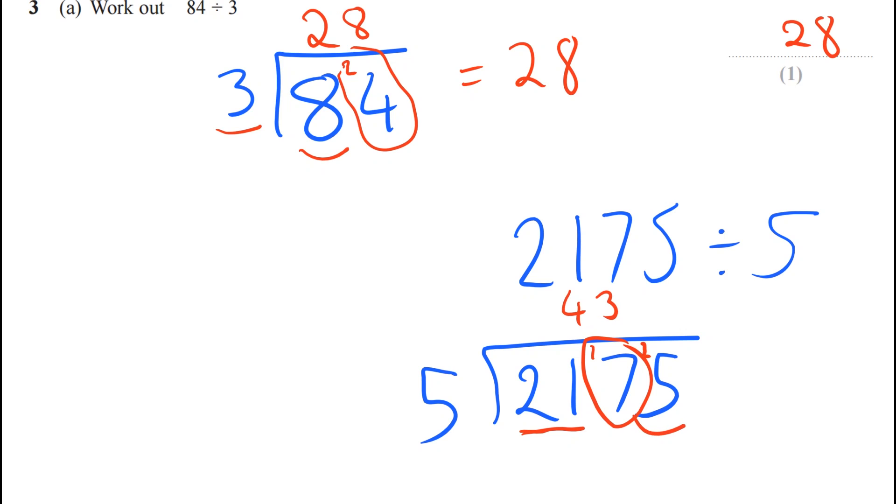The final one is 25. So how many times does 5 go into 25? And the answer is 5. So we can say that 2175 divided by 5 is 435.